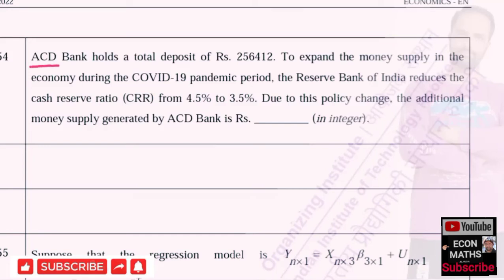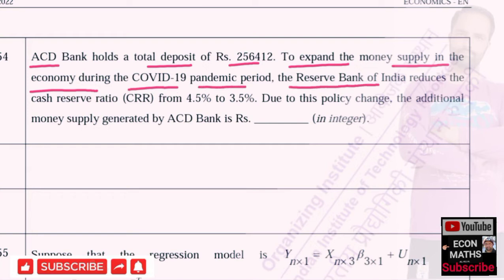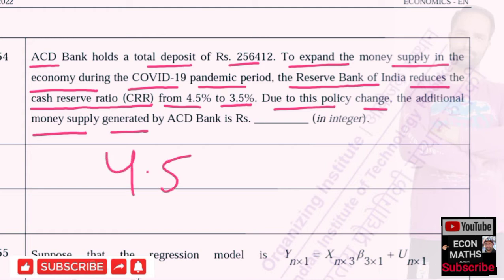The next question: ACD bank holds a total deposit of 2 lakh 56,412. To expand money supply in the economy during the COVID-19 pandemic period, the Reserve Bank of India reduces the Cash Reserve Ratio from 4.5 percent to 3.5 percent. Due to this policy change, we have to find out the additional money supply generated by ACD bank.